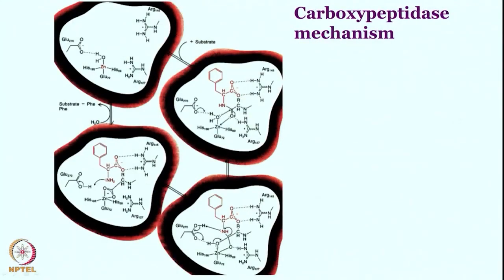The next step is deprotonation of water, giving zinc hydroxide formation. With 2 histidine and 1 glutamate still present, as soon as zinc hydroxide is formed it attacks on the carbonyl site. A tetrahedral intermediate is formed, with hydrogen bonding from arginine with the amide compound. The entire peptide residue with a carboxylate unit is helped positioned perfectly by arginine 145, which is really, really perfectly positioned.